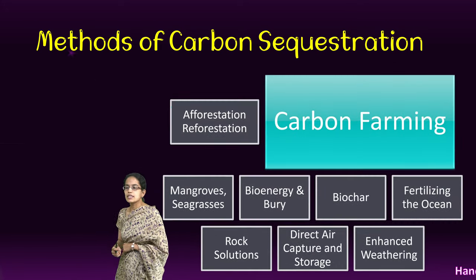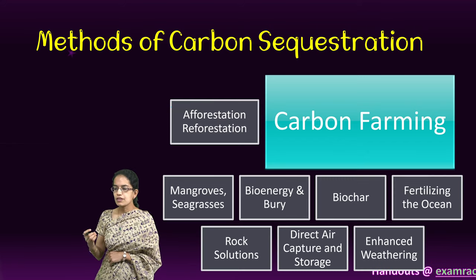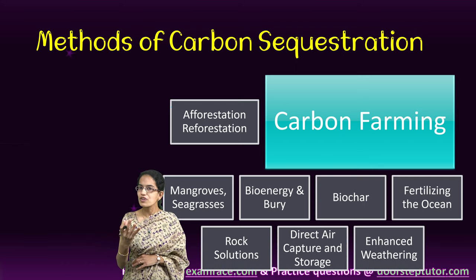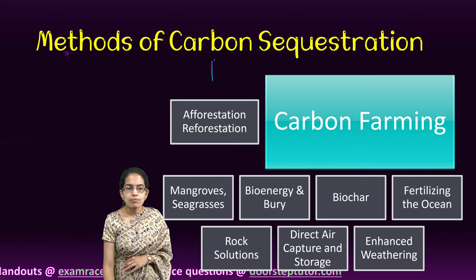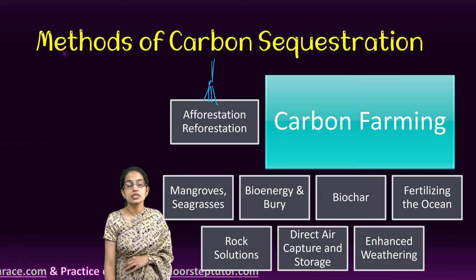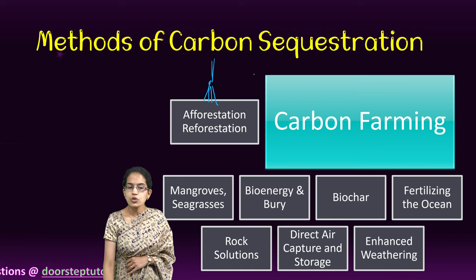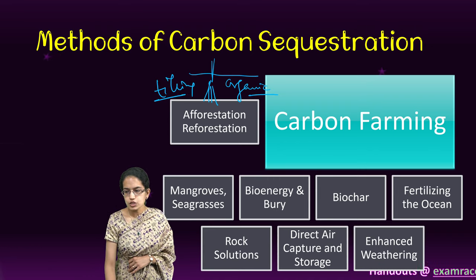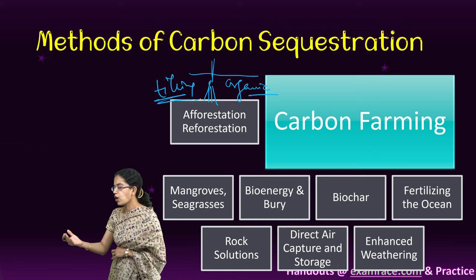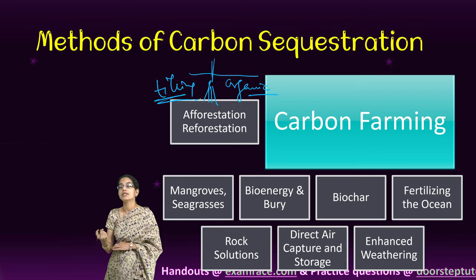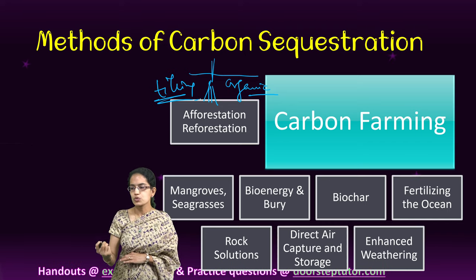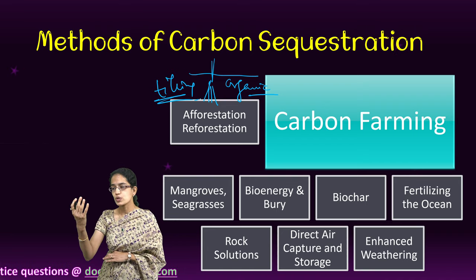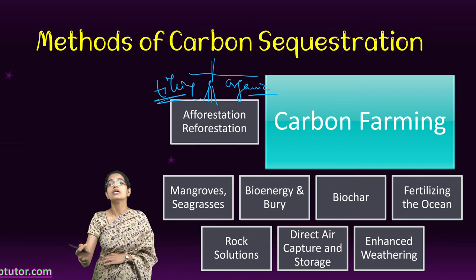The next method is carbon farming. Carbon farming involves growing crops with deeper roots and deeper soil penetration, incorporating more organic matter into the soil, and increasing tilling so that more carbon is trapped in the soil. Certain trees have the capability to store nearly more than ten times the carbon of other crops.